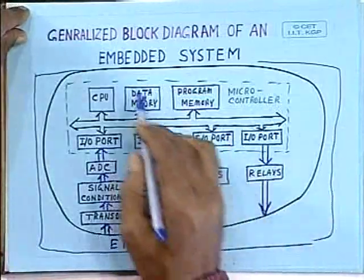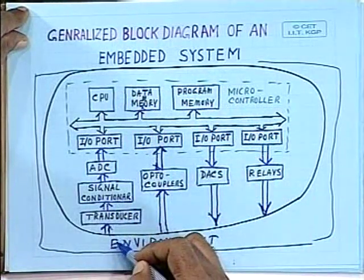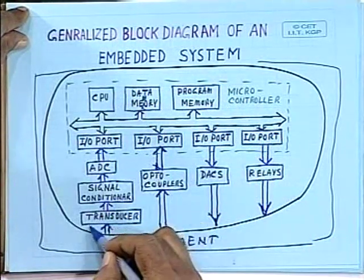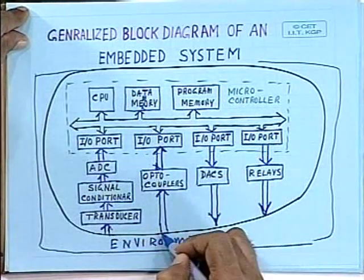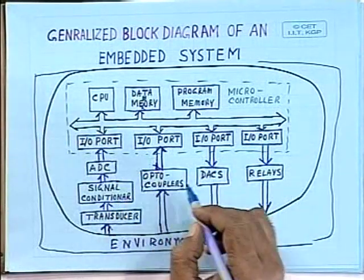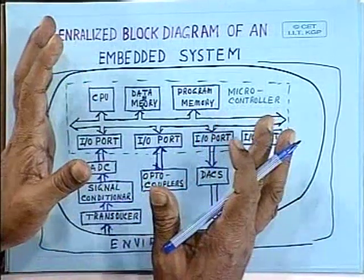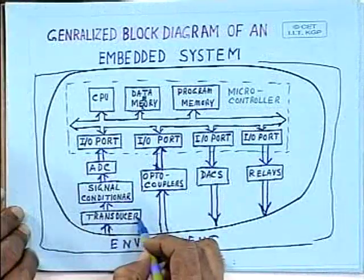In four lectures, I shall cover all the devices required for implementing embedded systems — in other words, for interfacing with the environment. That means: transducers, signal conditioners, ADCs, optocouplers, DACs, and relays. These are the things we shall cover in four lectures, including this one. Today we shall discuss about transducers.